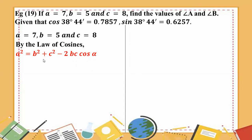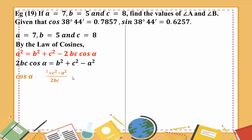Cos of alpha equals b squared plus c squared minus a squared, divided by 2bc. That's what we need to use.